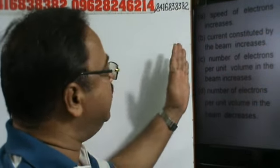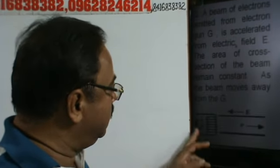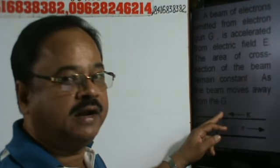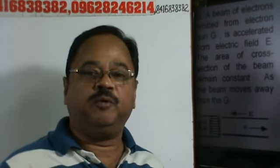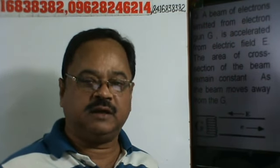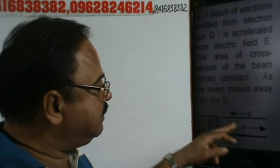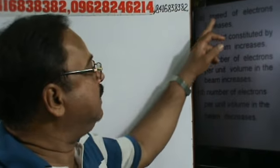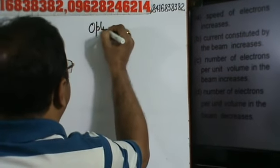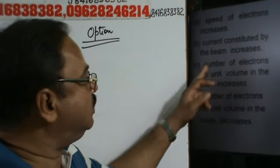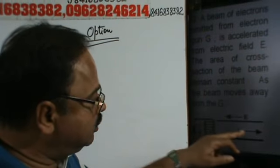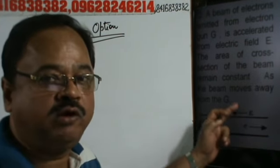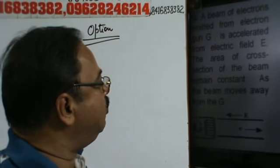Let's see. Here we have an electron gun, and electrons are emitted in the direction of the electric field. We know that positive charge experiences force in the direction of electric field, but electrons experience force opposite to the direction of electric field. So the electric field and electron velocity are opposite, therefore the speed of electron increases — option A is correct. The electrons will accelerate because force on electron is opposite to the direction of electric field.